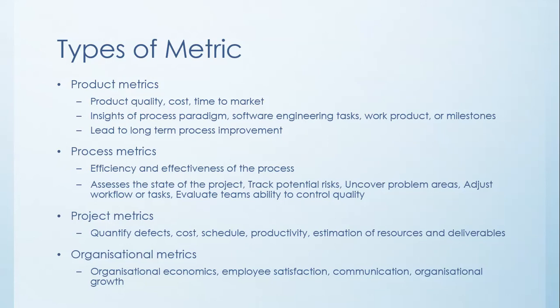The next type of metric are process metrics. Process metrics talk about the efficiency and effectiveness of the process itself. It assesses the state of the project. It could track potential risks. It could uncover problem areas, adjust the workflow or tasks, and generally could evaluate your team's ability to control quality.